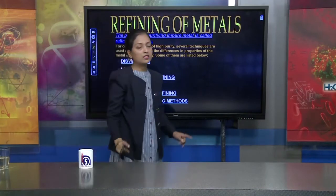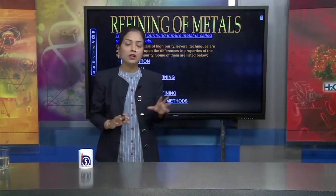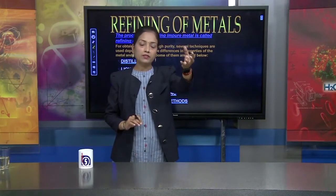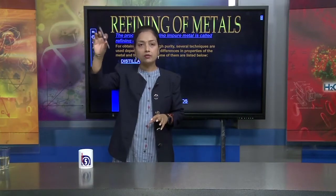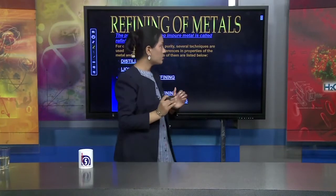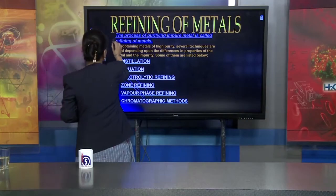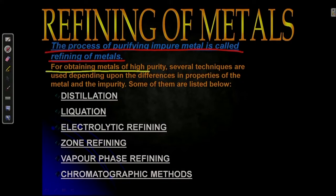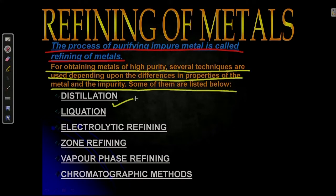The last process is refining of metal. The process of purifying impure metal is called refining of metal. For obtaining metal of high purity, several techniques are used depending on differences in properties of the metal and the impurity. The techniques are: distillation, liquation, electrolytic refining, zone refining, vapor phase refining, and chromatographic process.